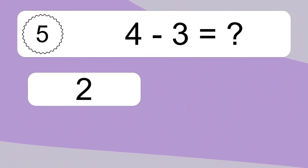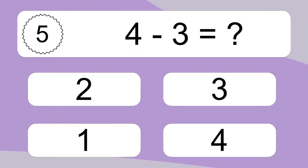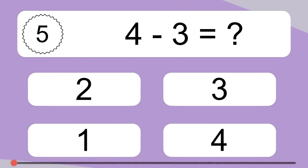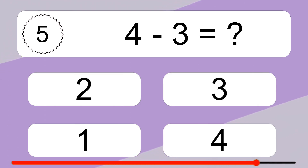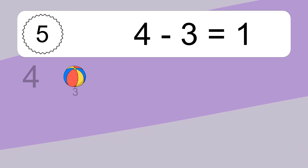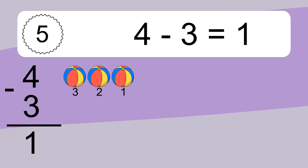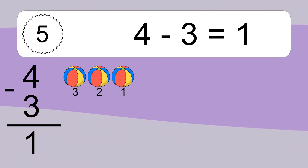4 minus 3 equals what? 4 minus 3 equals 1. Let's count it: 3, 2, 1.